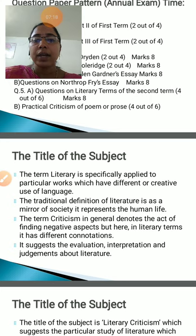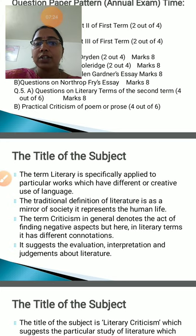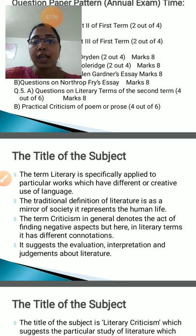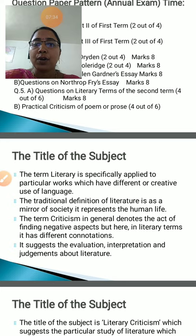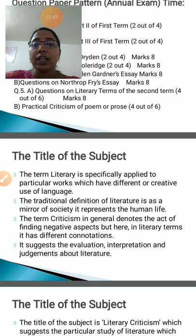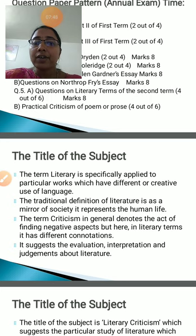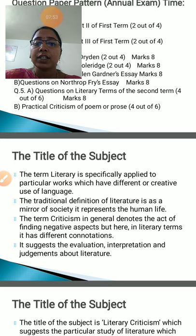What is meant by criticism? This is part of literary criticism, not in the general sense. In general, criticism denotes the act of finding negative aspects. But in literary terms it has a different connotation — literary criticism does not just find negative aspects of literature, but analyzes the work transparently and objectively. It suggests evaluation, interpretation and judgments about that literature. It is not just commentary.